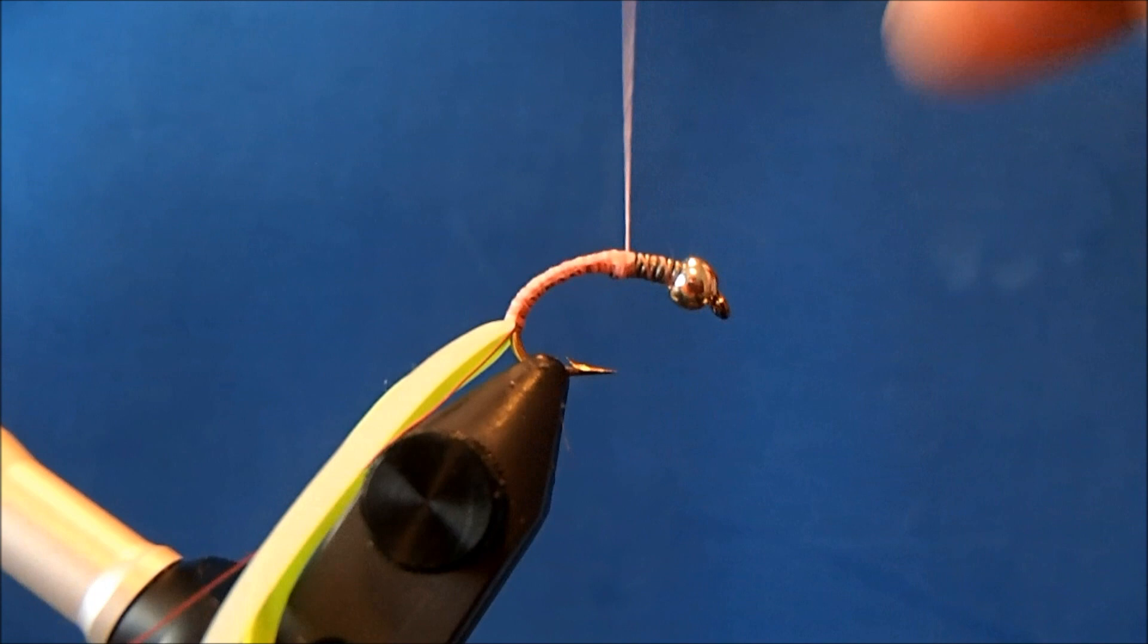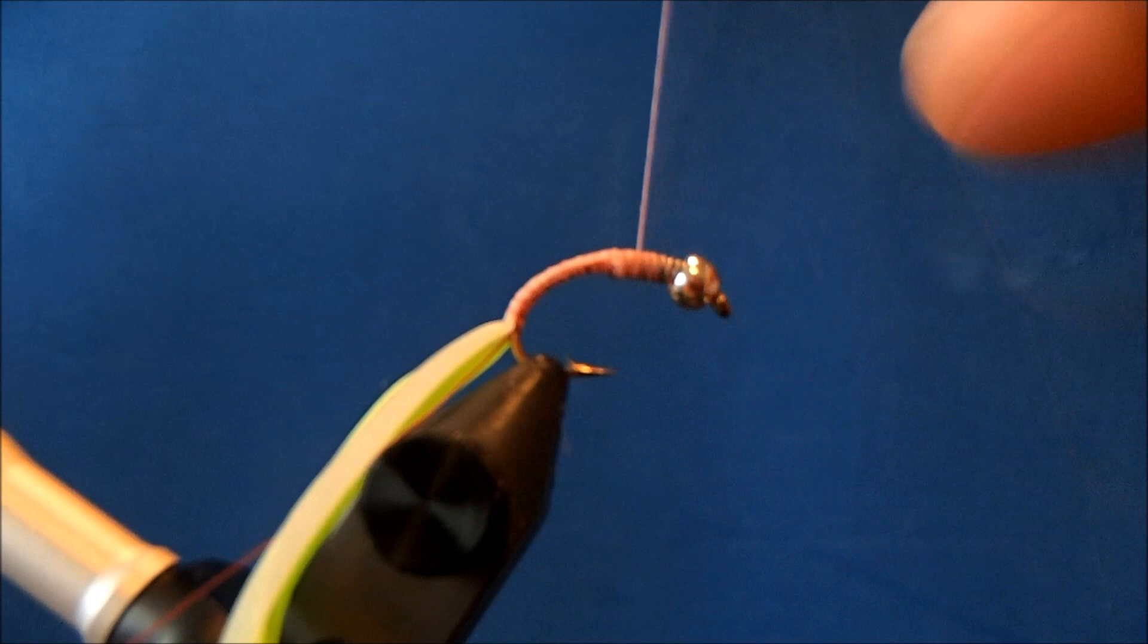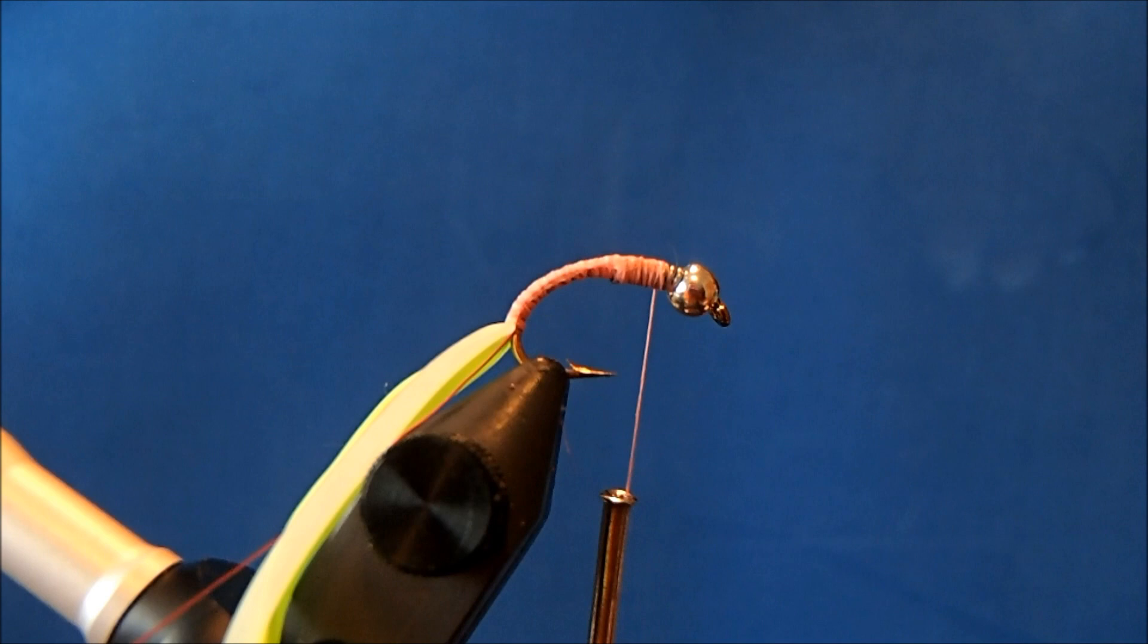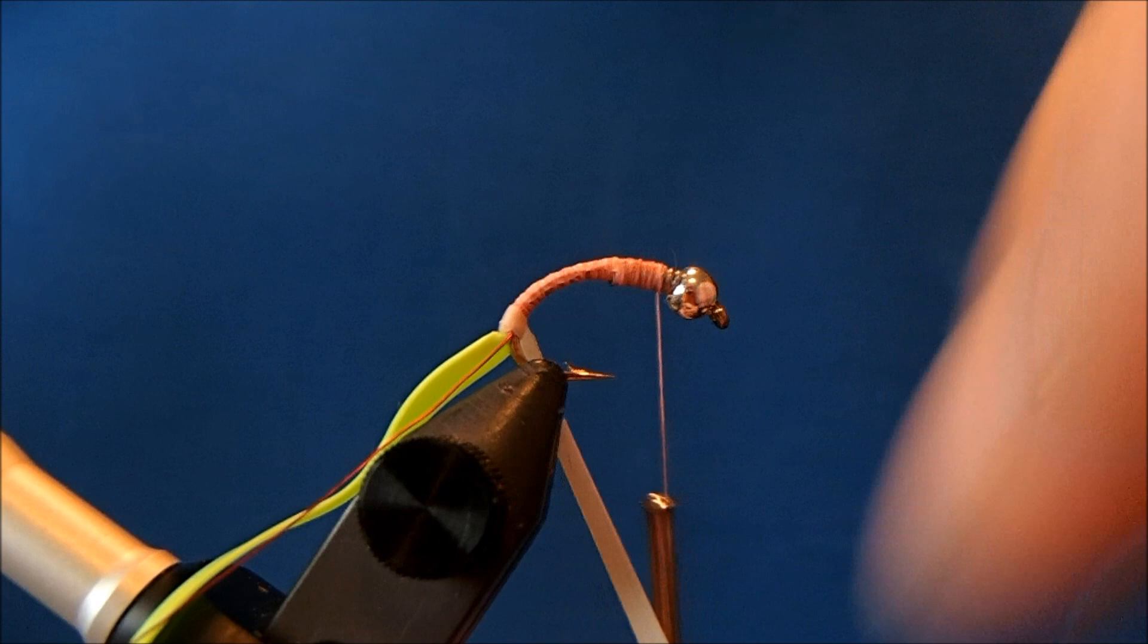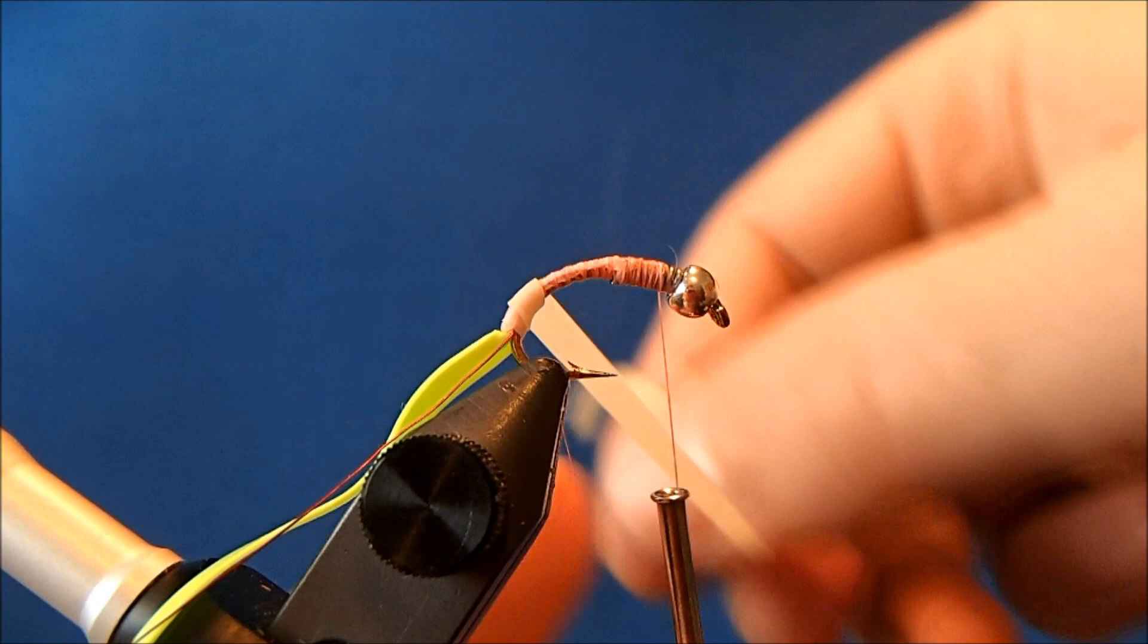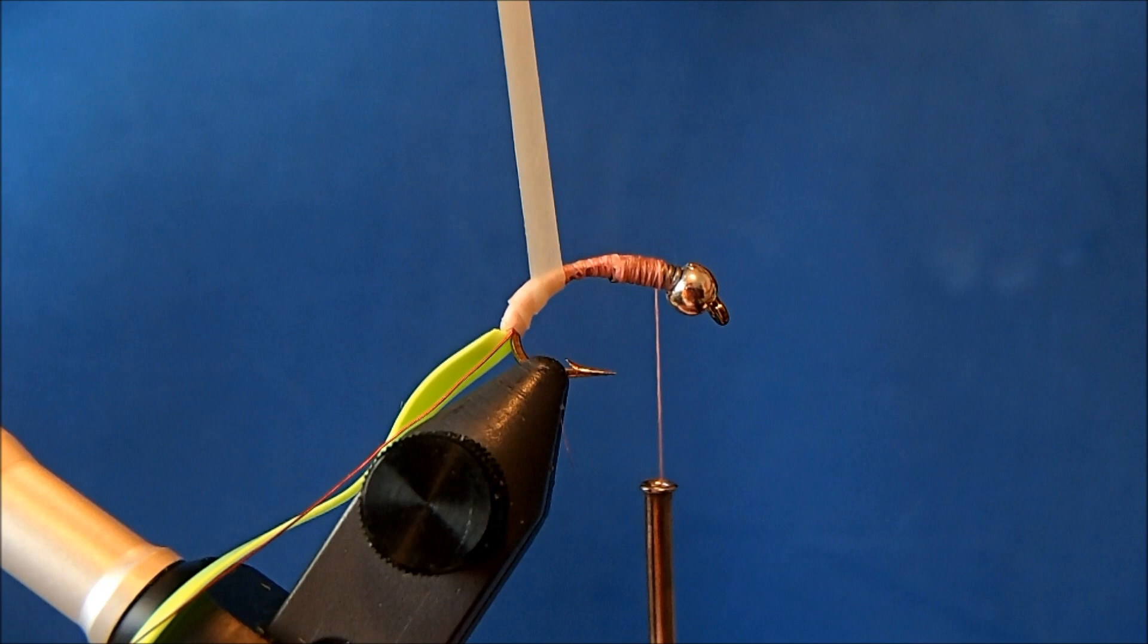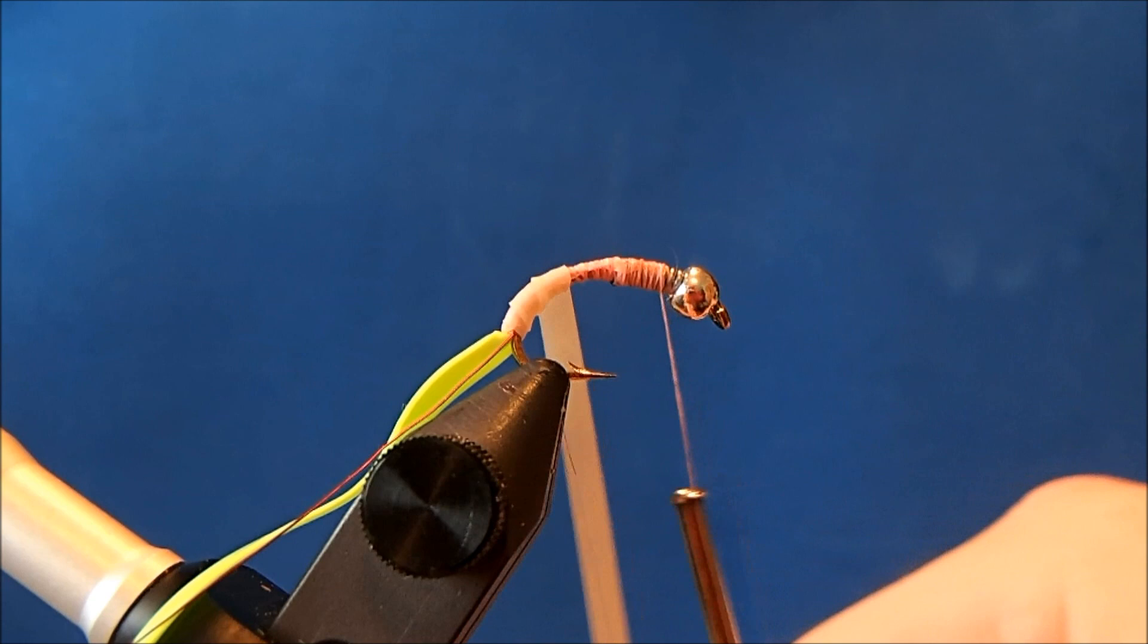Now if you wanted to create a bigger bodied pattern, you can dub underneath this and it will give you some more volume. But I'm just going to fill in any gaps with my thread. Now I can take this Nymph Skin and start to wrap it up and I'll start by taking wraps that are pulled relatively tight.